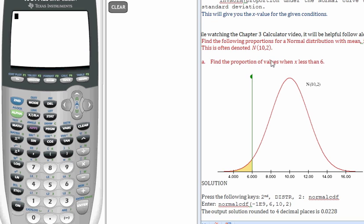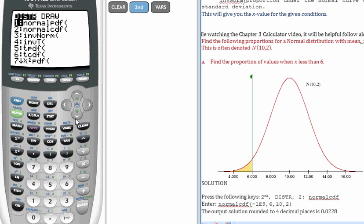I'm looking to find the proportion of values when x is less than 6. To do that, I'm going to press the following keys: the second key, then the distribution, and we have a normal distribution, which is the second one down, normal CDF, and I hit enter.